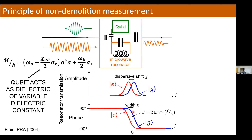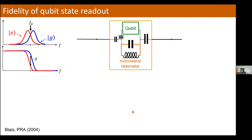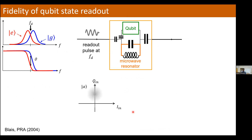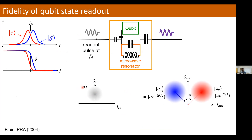Let's look a little more at what really controls the fidelity of these circuit QED readout schemes. We can understand that by imagining a readout pulse sent to the microwave resonator, represented as a coherent state in the IQ plane with ket alpha. When the pulse transmits through the resonator, depending on the qubit state it picks up one of two possible phases — either it rotates to the left or to the right — corresponding to the ground state or the excited state.